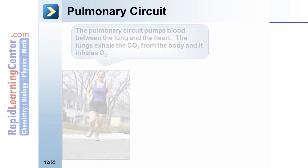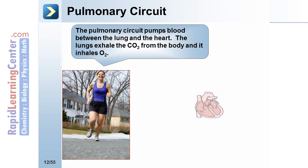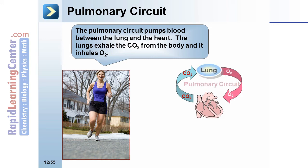The pulmonary circuit pumps blood between the lungs and the heart. In this way, the lungs exhale CO2 from the body and inhale O2, and the oxygenated blood is pumped back to the heart and out to the body.